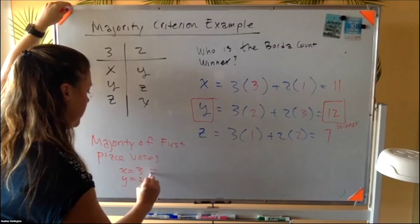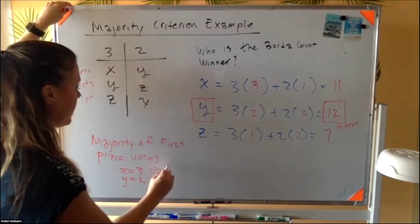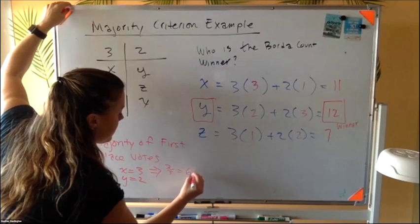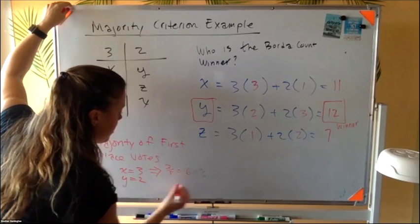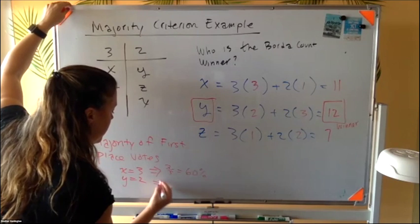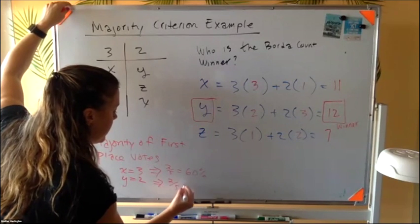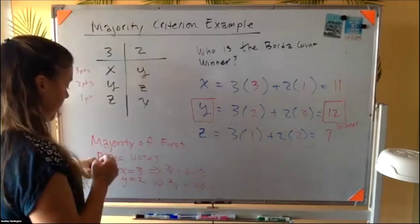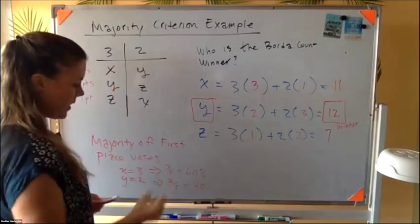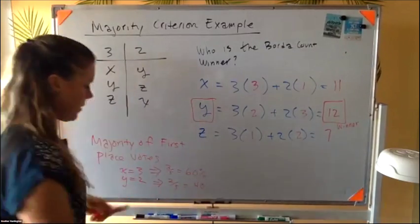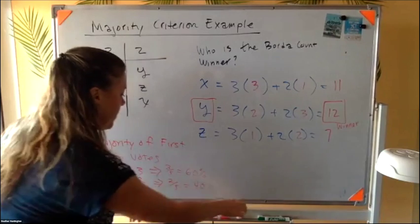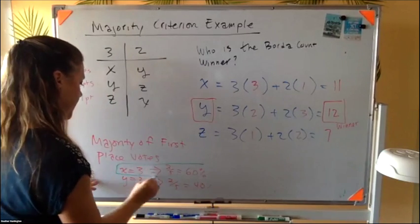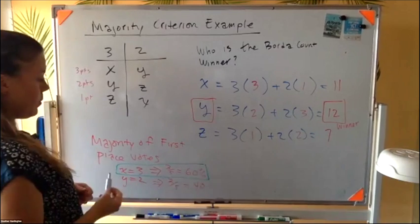So this is the same. So if it's three out of five, that equals 60%. That's definitely a majority. And this one is two out of five, which is 40%. So when X first saw these rankings, they were like, yes, I got a majority of the first place votes.